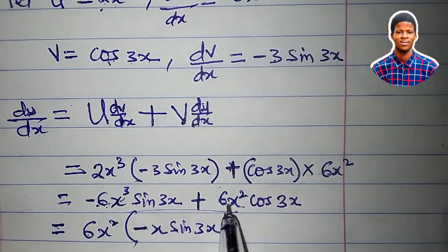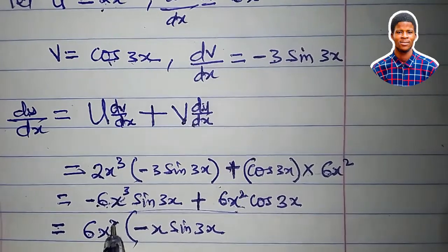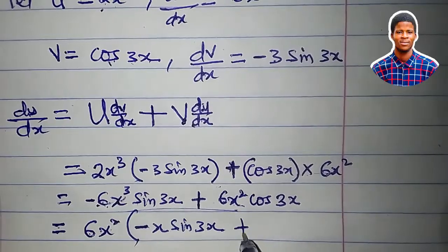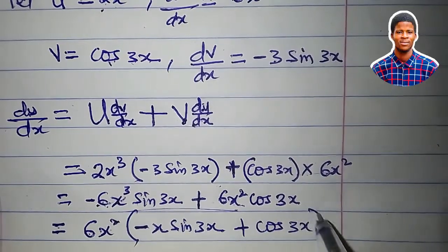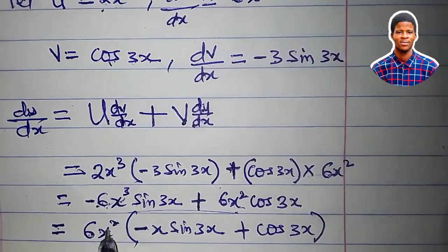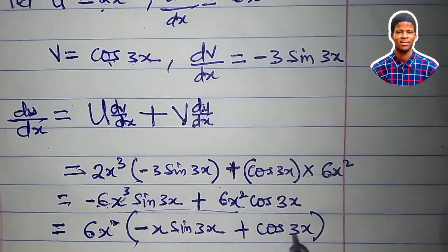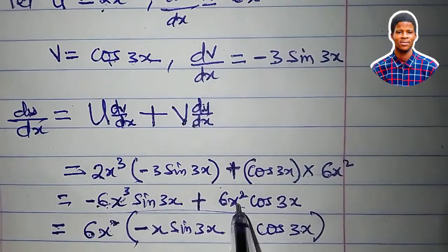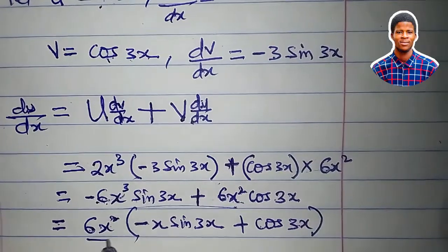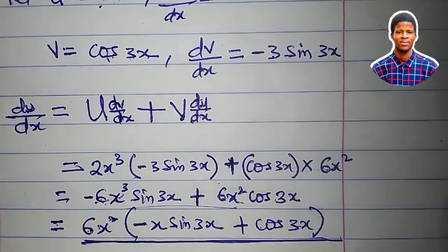Then 6x² divided by 6x² is 1. So what's just left is cos 3x. So that 6x² times cos 3x is 6x² cos 3x. And this is dy/dx.